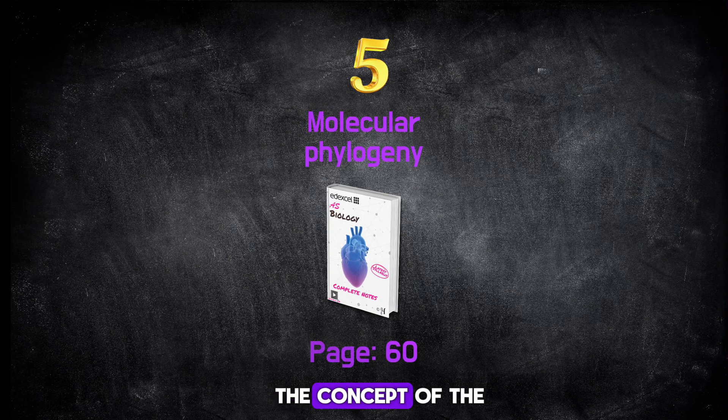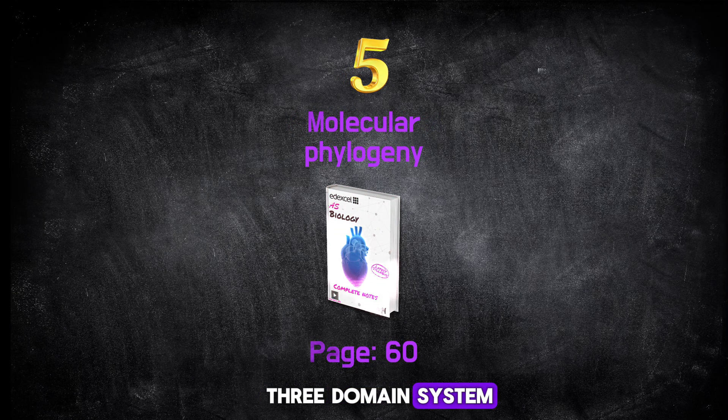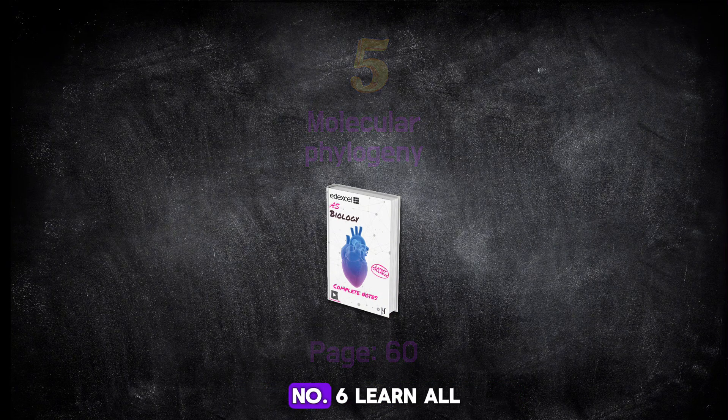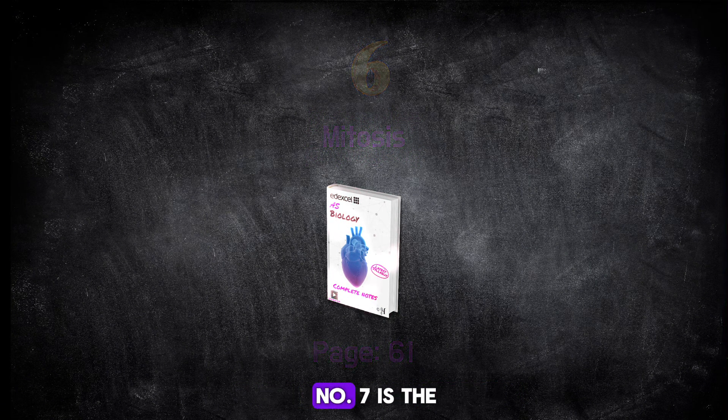Number five is the concept of the three-domain system or molecular phylogeny. Number six covers all the details of mitosis.